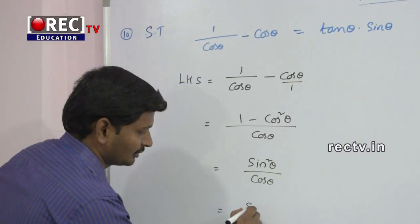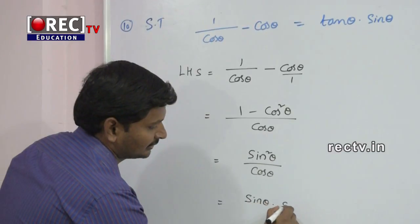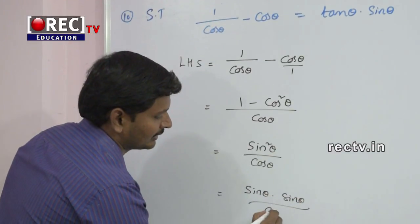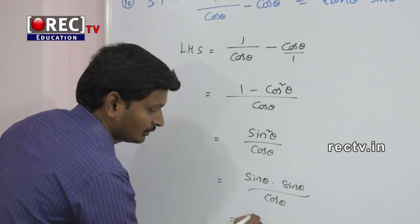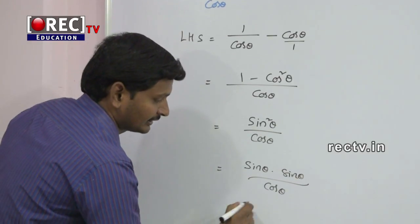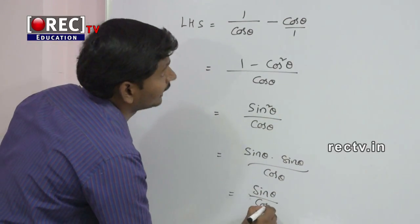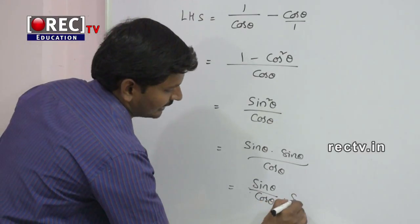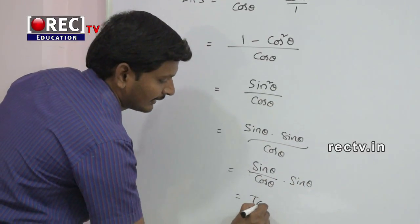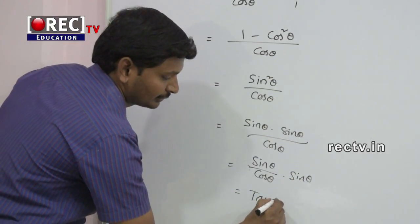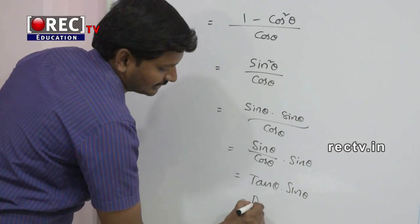1 minus cos squared theta equals sin squared theta, divided by cos theta. Sin squared theta can be written as sin theta into sin theta divided by cos theta. Sin theta by cos theta equals tan theta, so this becomes tan theta into sin theta, which equals LHS. Hence proved.